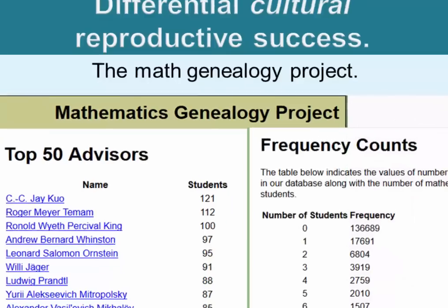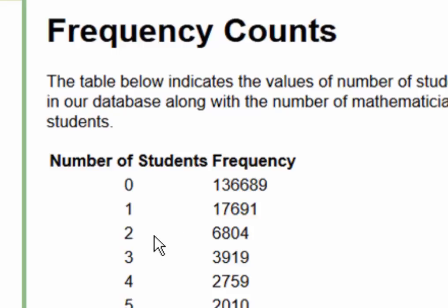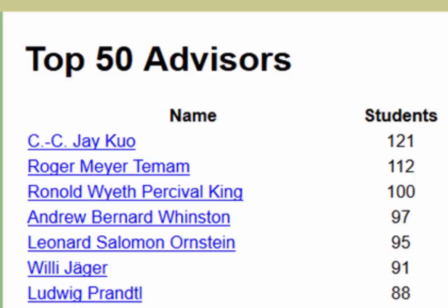Until we add frequency counts for all mathematicians with PhDs: there are 136,689 mathematicians with PhDs who have exactly zero students who earned a PhD under them, 17,691 who had only one student, and 6,804 who had two. From this perspective, CCJ Kool with 121 has a much higher intellectual fertility rate than the great majority of mathematicians.